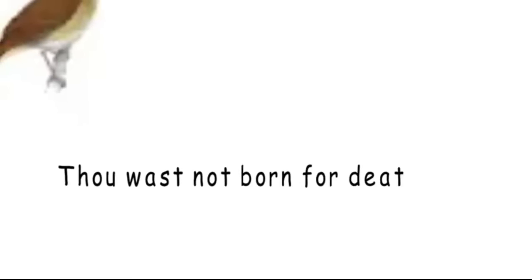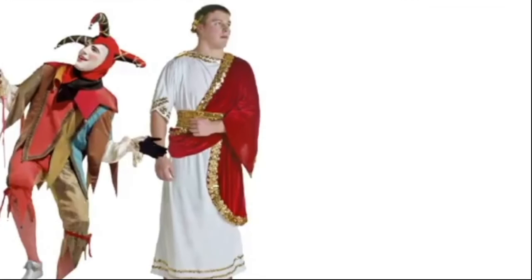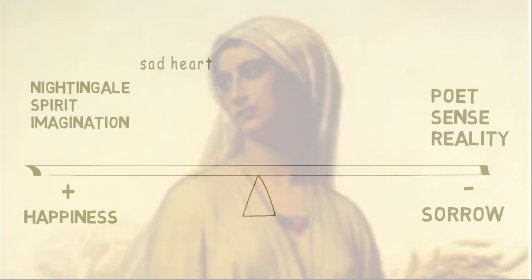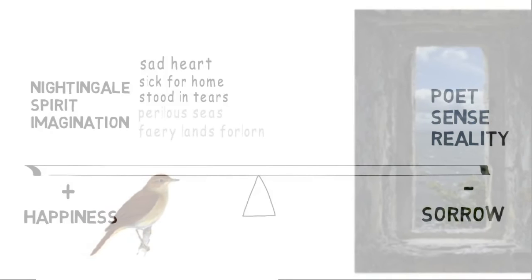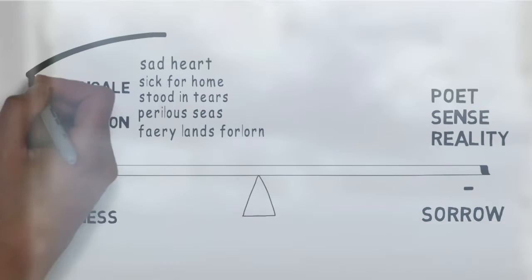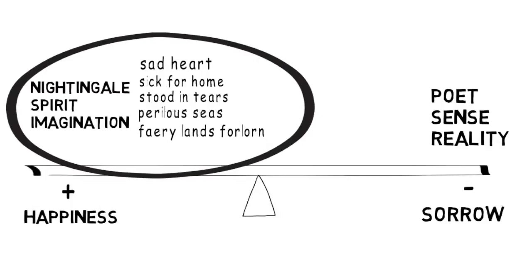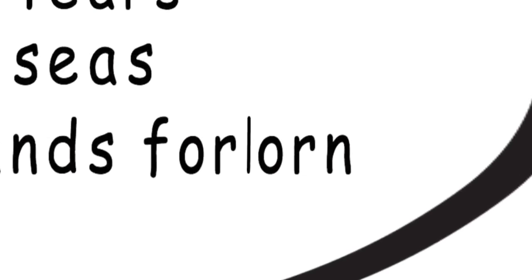'Thou wast not born for death, immortal bird! No hungry generations tread thee down. The voice I hear this passing night was heard in ancient days by emperor and clown; perhaps the self-same song that found a path through the sad heart of Ruth, when, sick for home, she stood in tears amid the alien corn. The same that oft-times hath charmed magic casements, opening on the foam of perilous seas, in fairy lands forlorn.' So what's happening here is that even in the world of the nightingale, the poet finds sadness, sickness, peril. The fairy lands are forlorn. The world of the nightingale has its own unhappiness, its own suffering.